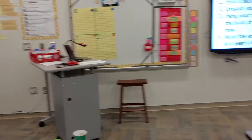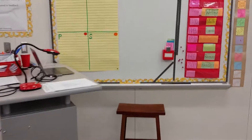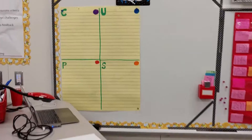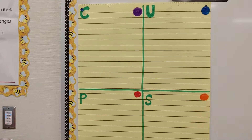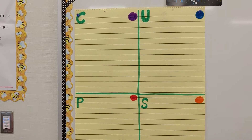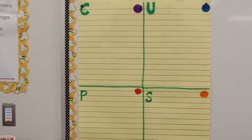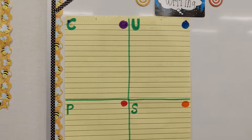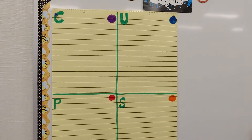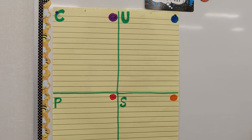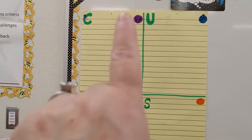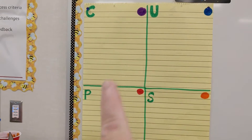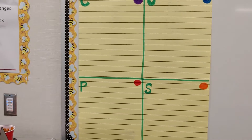I just want to show you the front of the room. I'm ready for my first writing lesson, which is where I introduce the acronym CUPS. Basically on the first day I figure out what conventions the students already know. CUPS stands for Capitalization, Usage, Punctuation, and Spelling — so what are some rules that they already know?